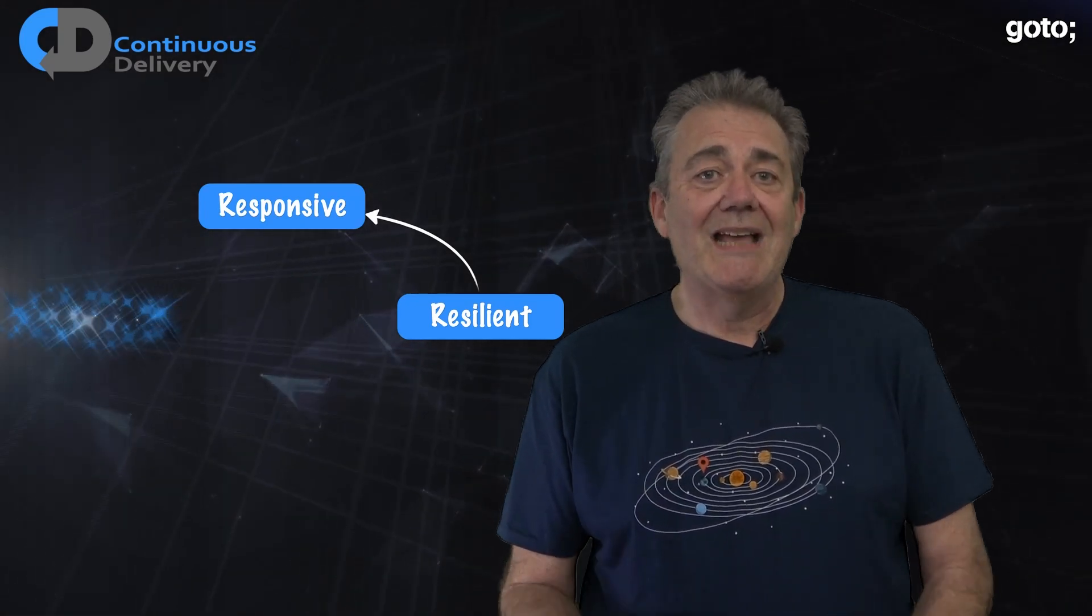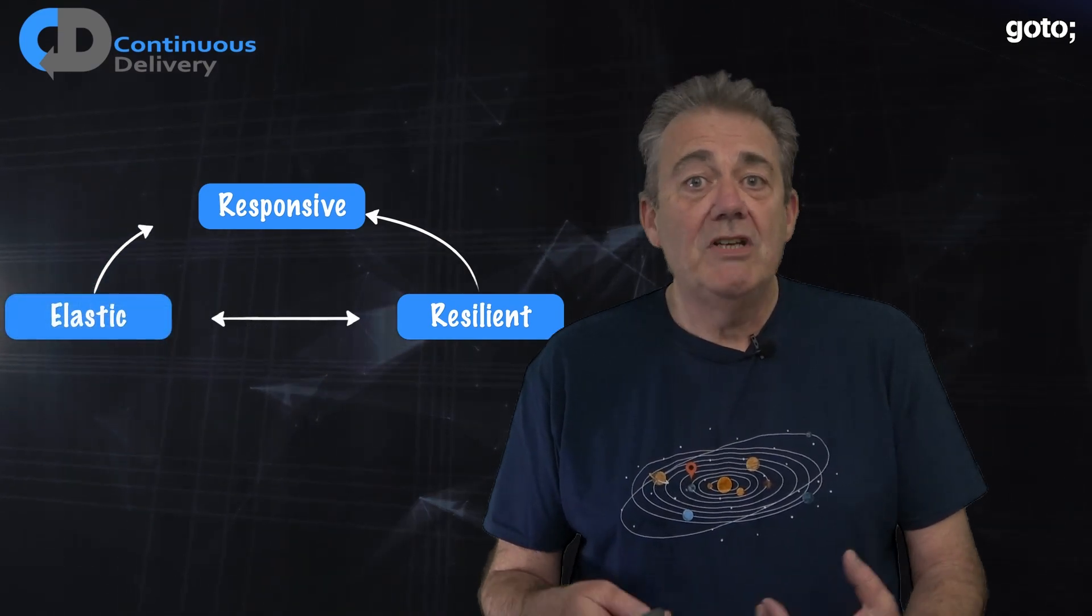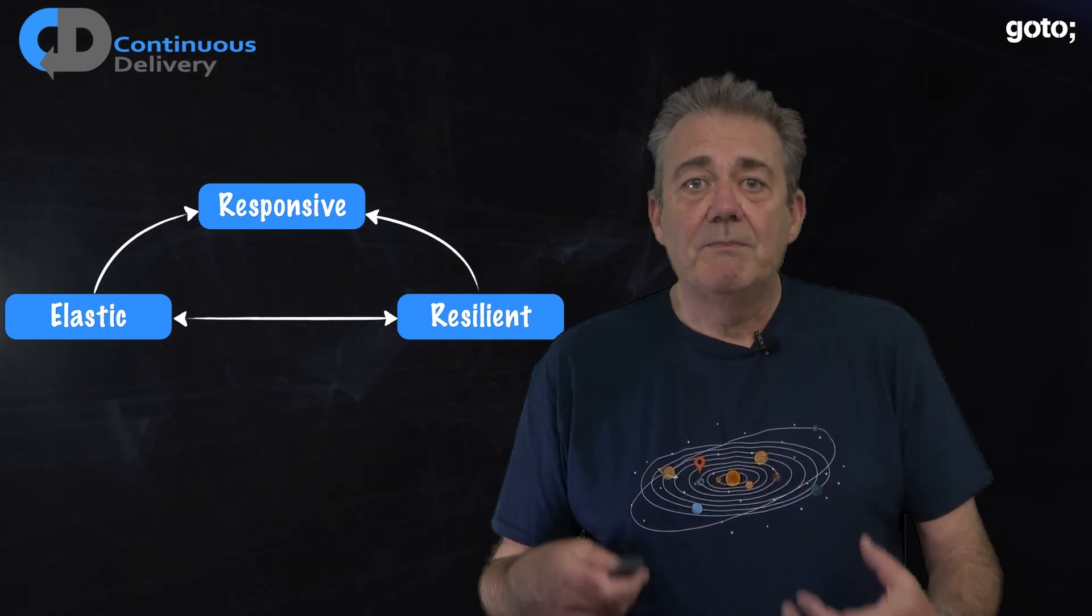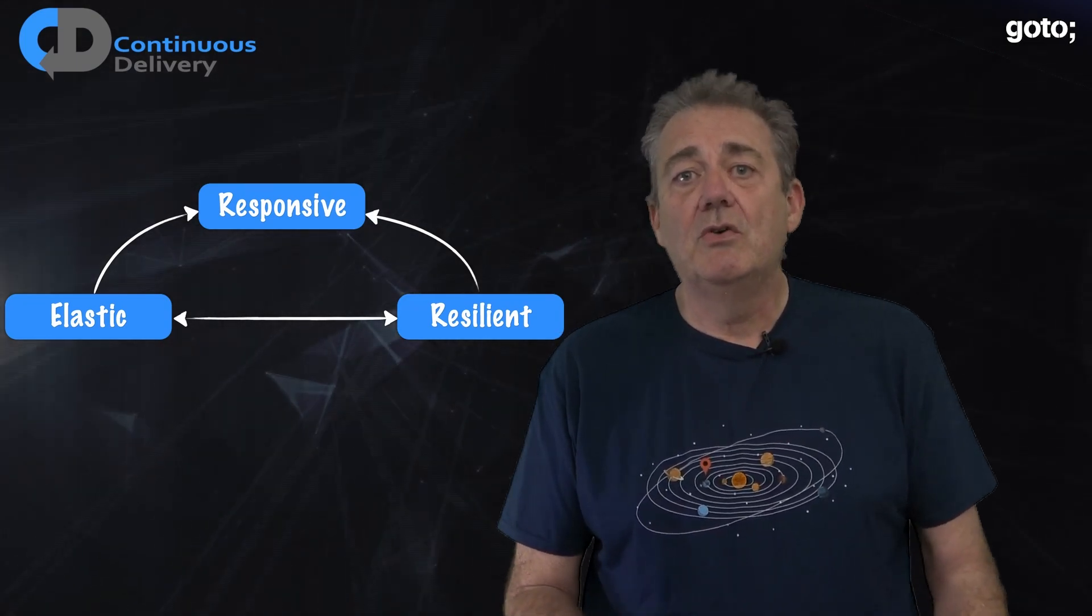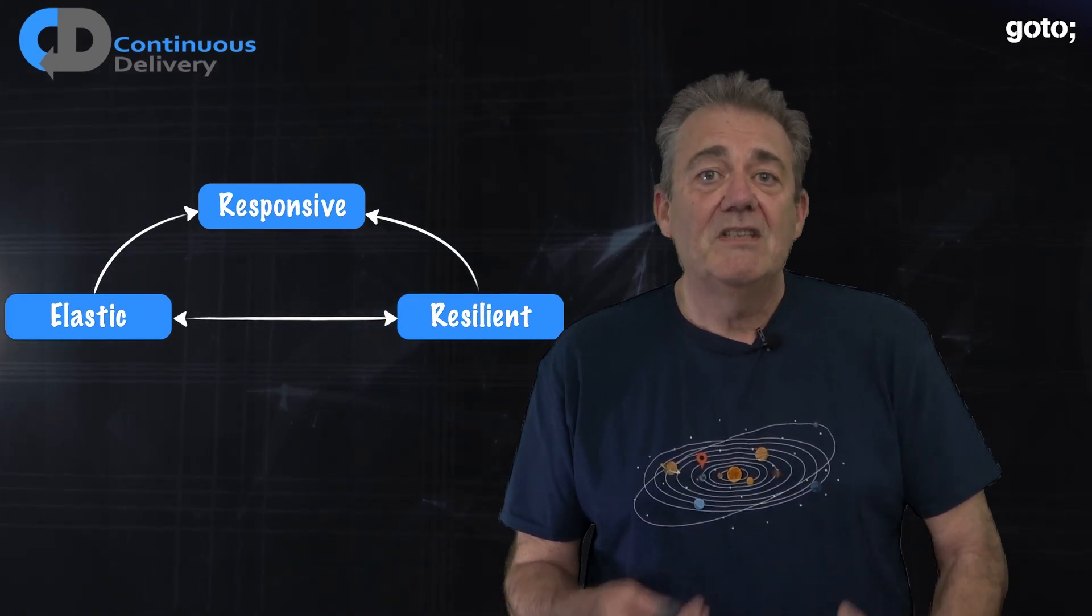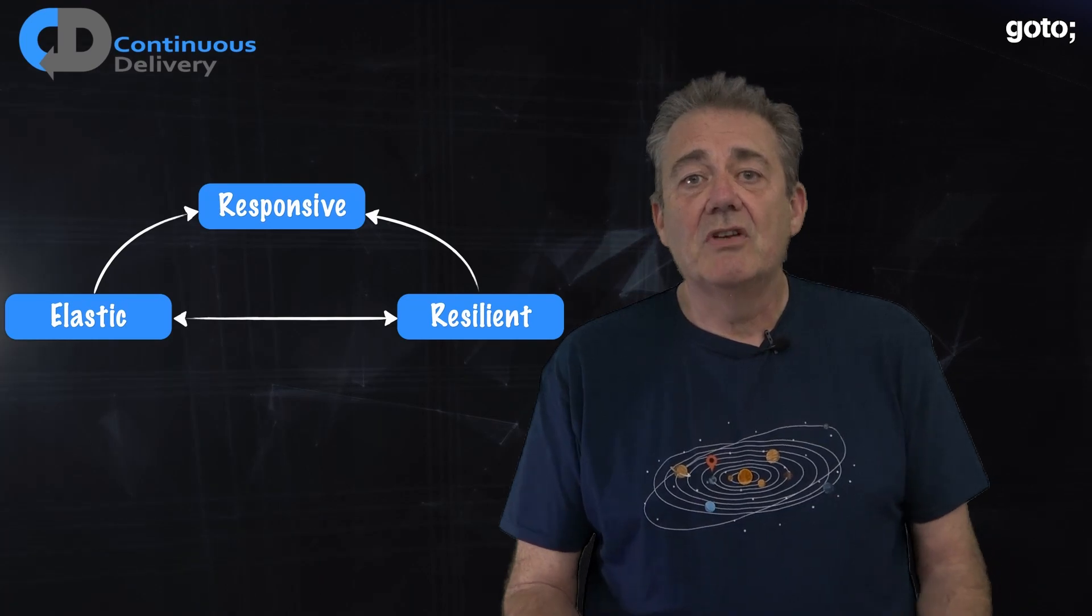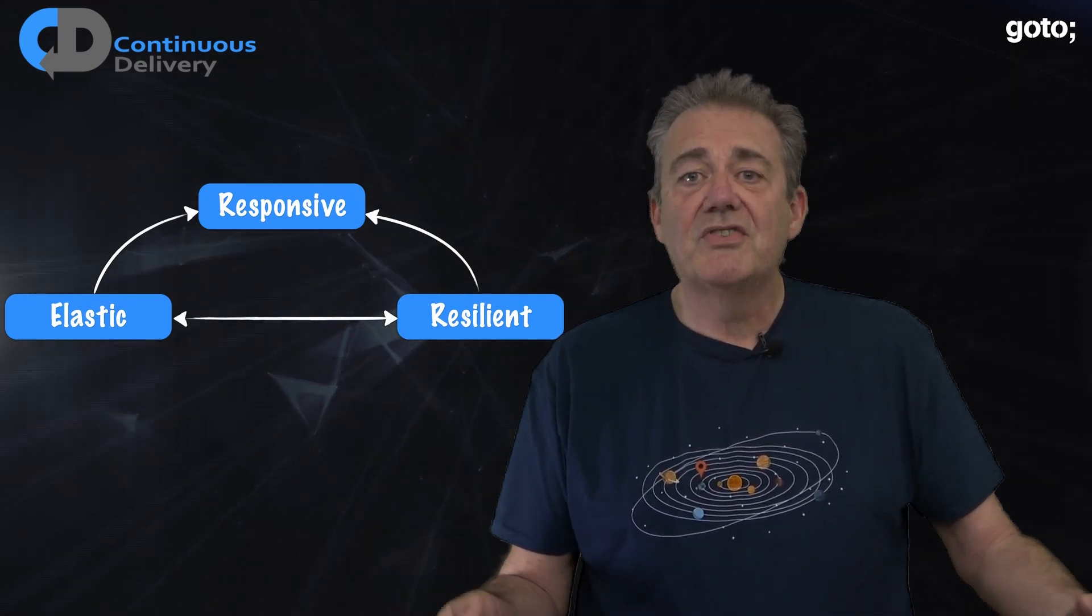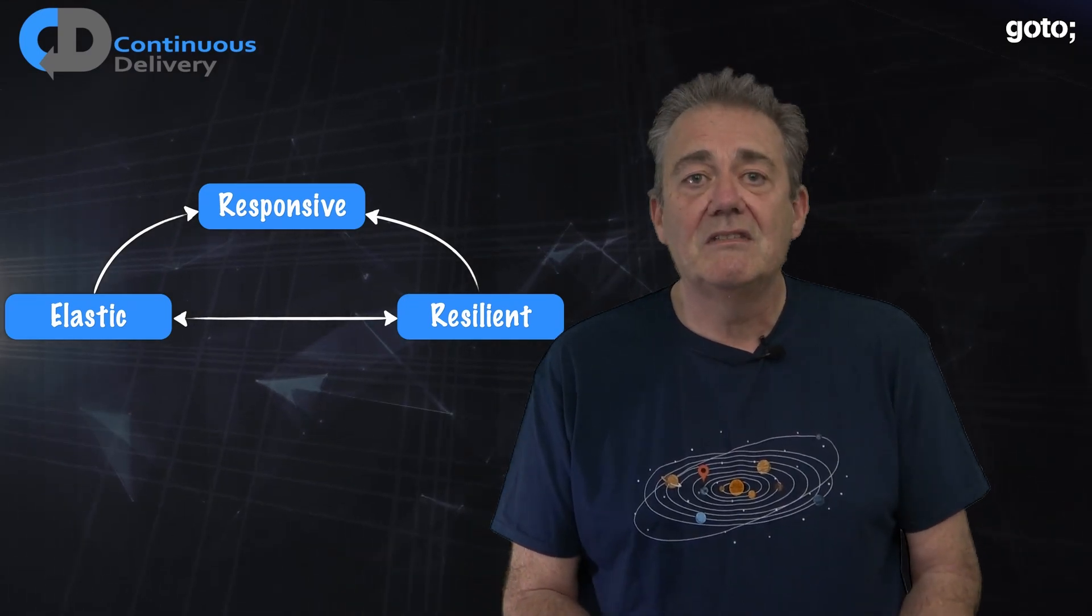Reactive Systems are also elastic, meaning that they remain responsive under varying workload too. They respond to change in the input rates by increasing or decreasing the resources that service that input. This ability is delivered through decentralized architecture, no contention points and ensuring that there are no central bottlenecks anywhere in the system.